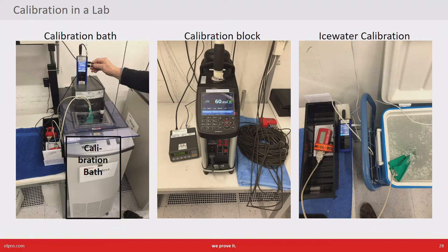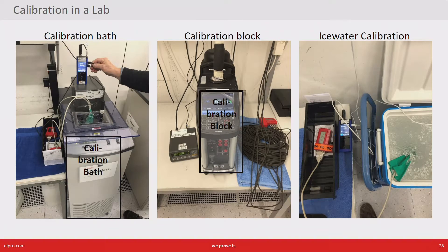The second example is a block calibrator. A block calibrator has the advantage that you can travel with it, so you can go to a customer on site. It can calibrate temperatures from minus 200 to plus 400 degrees. However, it has the disadvantage that the space for calibration is very small, so all you can do is calibrate external sensors — you cannot dip an entire device inside.